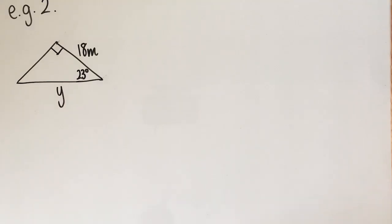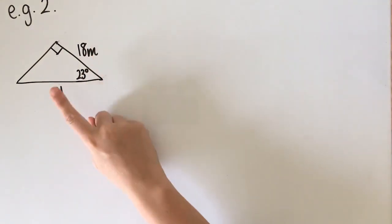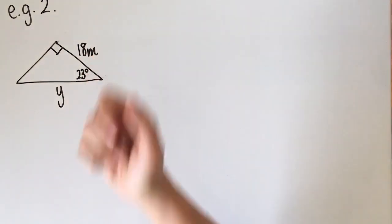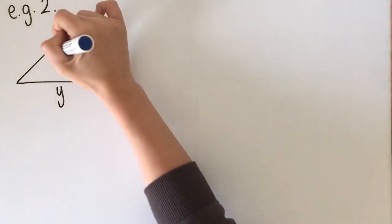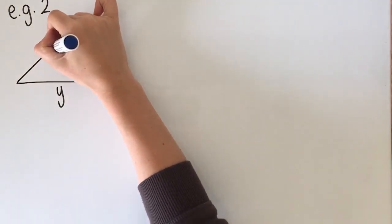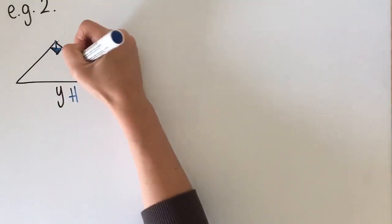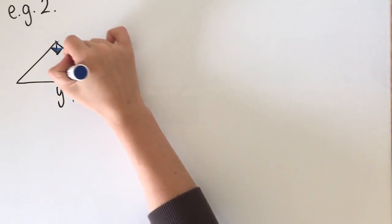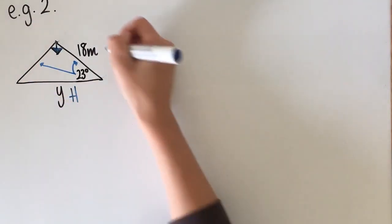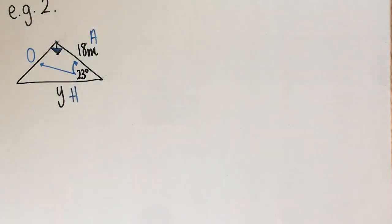This is our second example. We've been given a side with a value, a side with a pronumeral, and an angle with a value. The first step is to label our sides O, A and H. I always start with the hypotenuse. I know that this is H. Then I look at my angle — I've got a side that's close and a side that's far, so the close side becomes A and the far side becomes O for opposite.